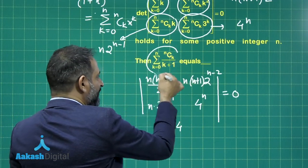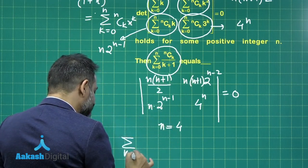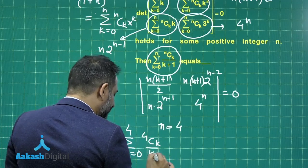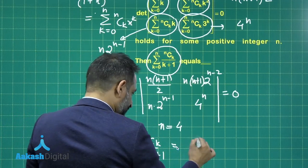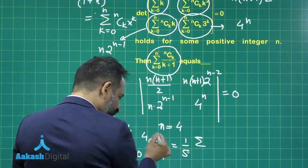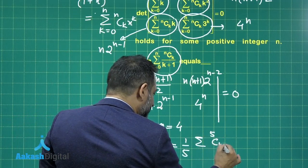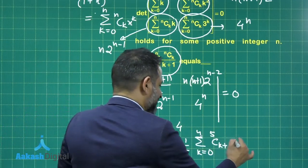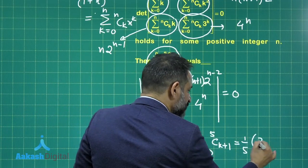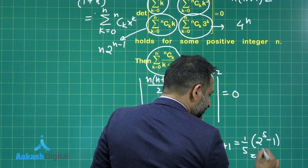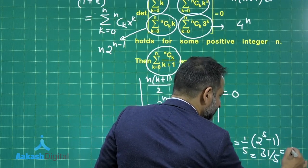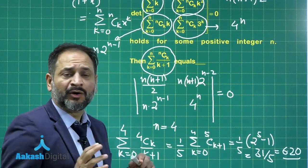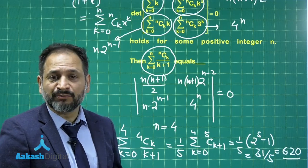What we need to calculate is the value of sigma from k=0 to 4 of 4Ck divided by (k+1), since n = 4. This can be converted to (1/5) times the sum of 5C(k+1) where k goes from 0 to 4. The summation equals (1/5)(2^5 − 1), which is 31/5, equal to 6.20. This is the answer — a slightly different problem that appeared to be about determinants but was ultimately more about the binomial theorem.